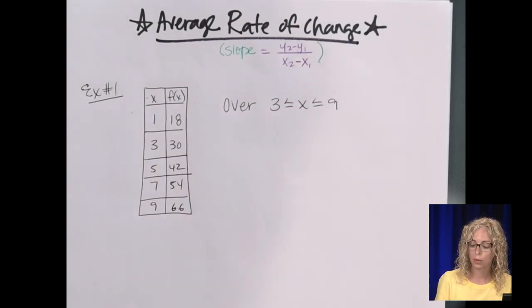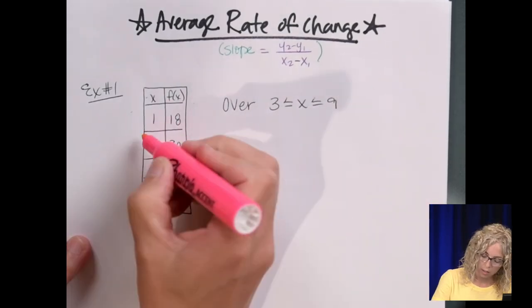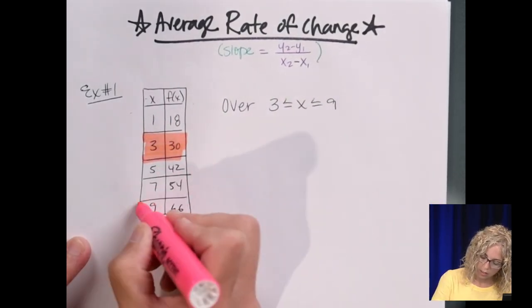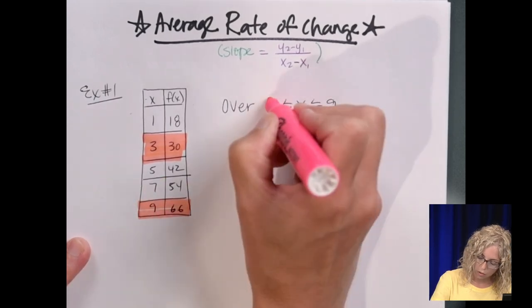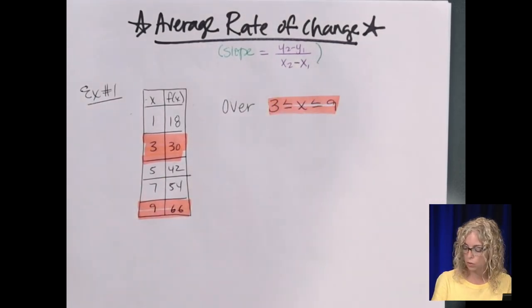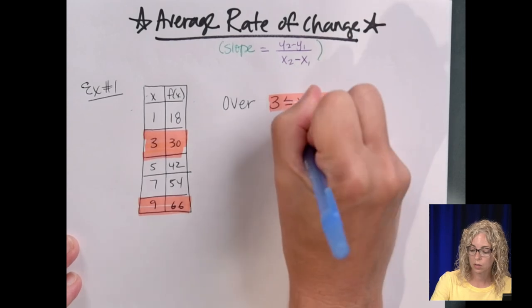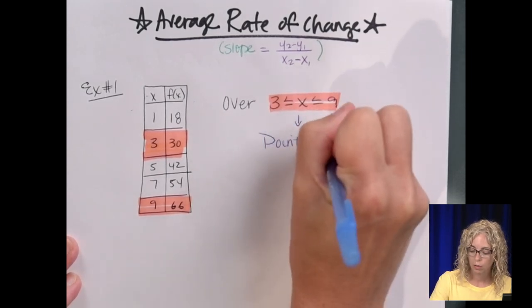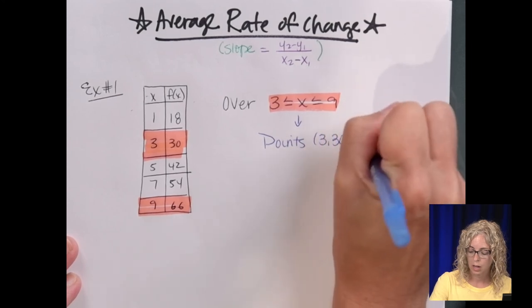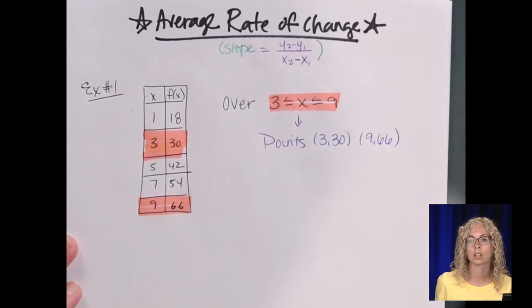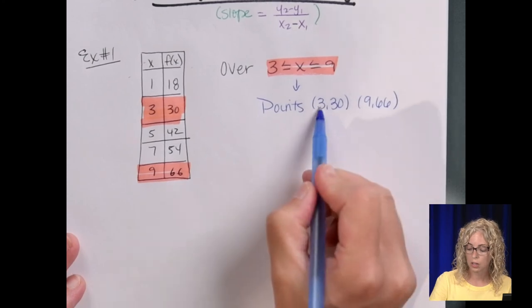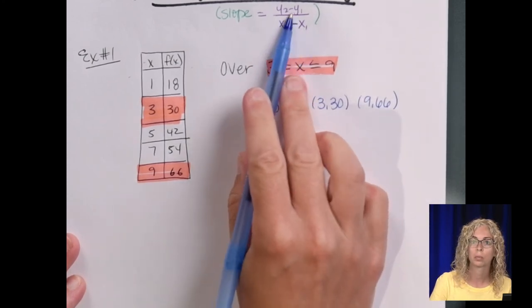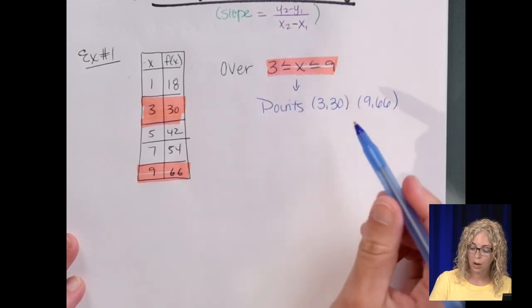So you look at the table where x is 3, to x is 9. So these are the two points you want to use. So this gives us the points 3, 30, and 9, 66. So there's your x1, y1, there's your first point, the subscript just stands for point 1 and point 2.